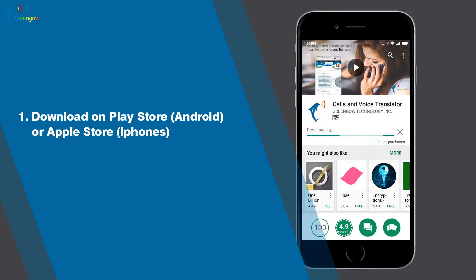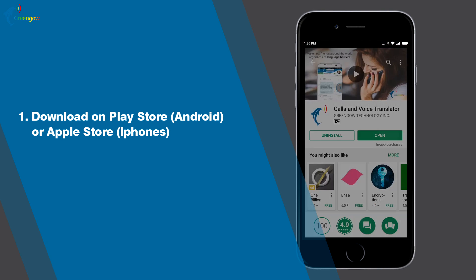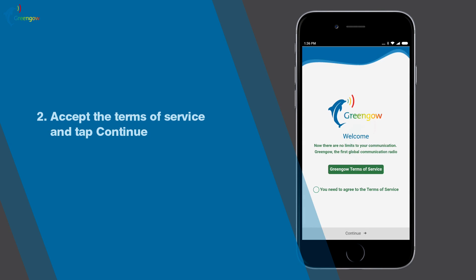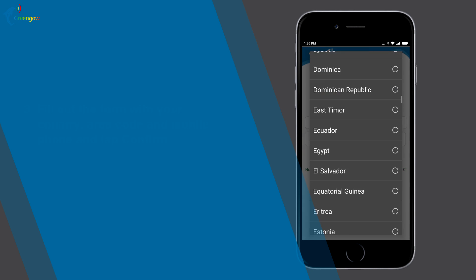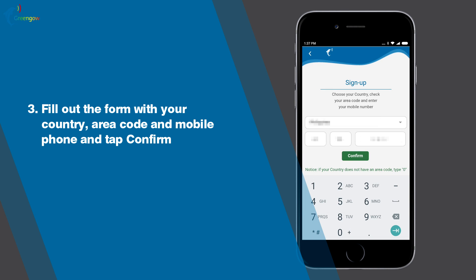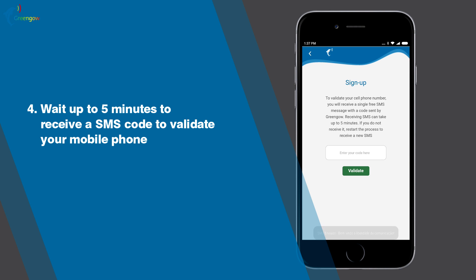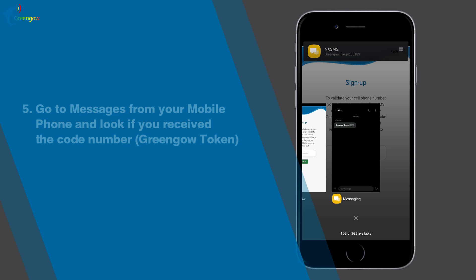Steps to start using Green Go: One, download on the Play Store for Android or the Apple Store for iPhones. Two, accept the terms of service and tap Continue. Three, fill out the form with your country area code and mobile phone number, and tap Confirm. Four, wait up to five minutes to receive an SMS code to validate your mobile phone.